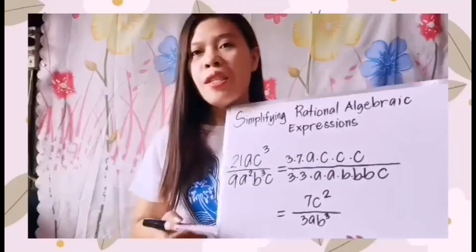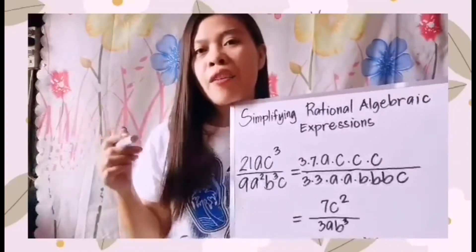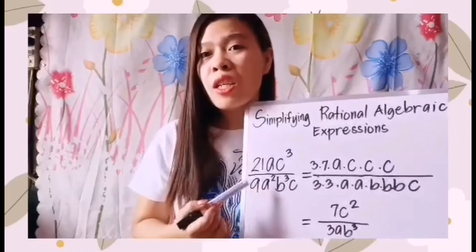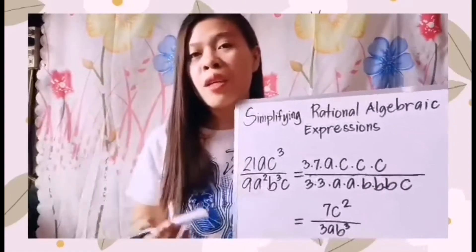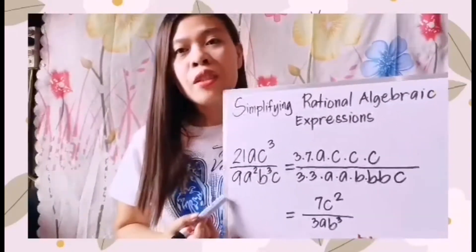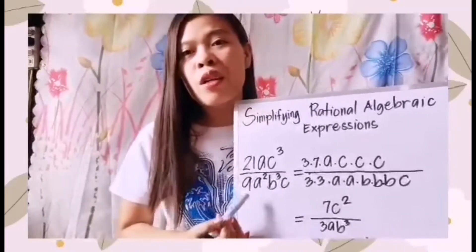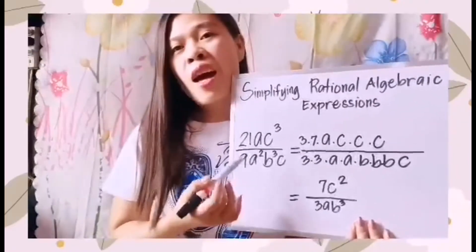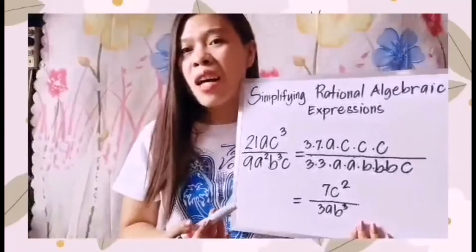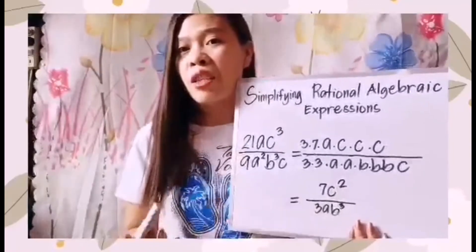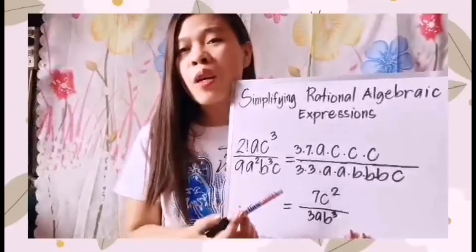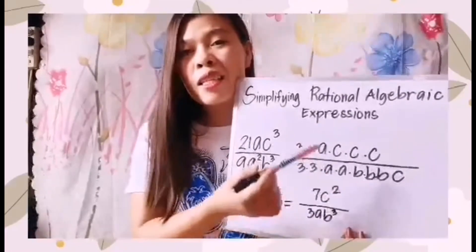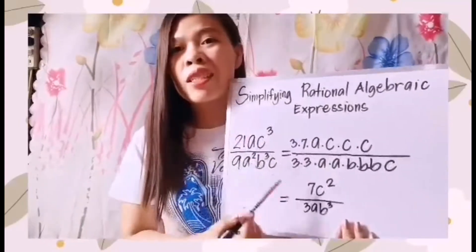Let us have our third example. For this episode, we are simplifying rational algebraic expressions with monomial over monomial. Our third example is 21ac cubed over 9a squared b cubed c. Our numerator 21ac cubed simplifies as 3 times 7 times a times c times c times c — so we have 3 c's.